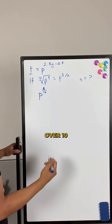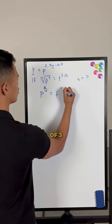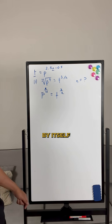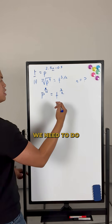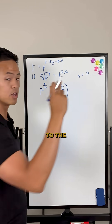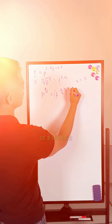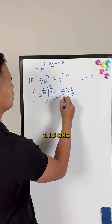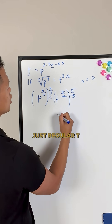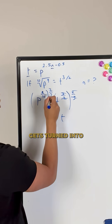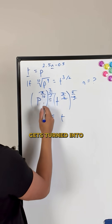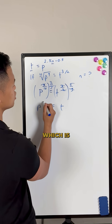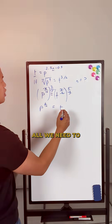That gives us p to the power of 9/10 equals t to the power of 3/2. We're almost there — we just want to get t by itself, so raise everything to the reciprocal, which is 2/3, on both sides. The left side becomes just t, and the right side becomes p to the power of (9/10) × (2/3), which is 6/10.